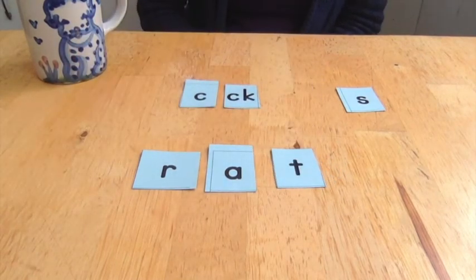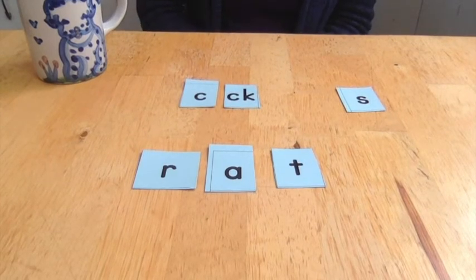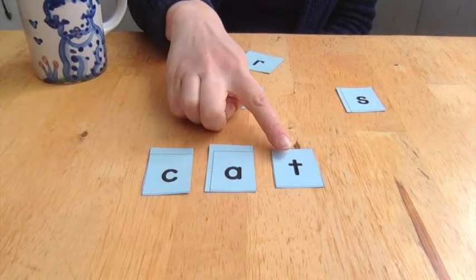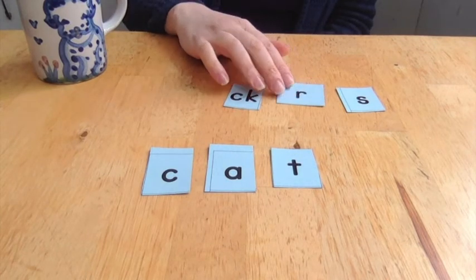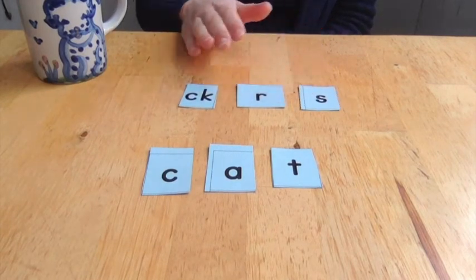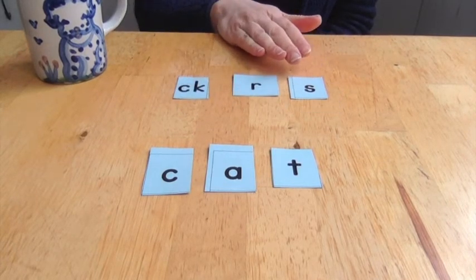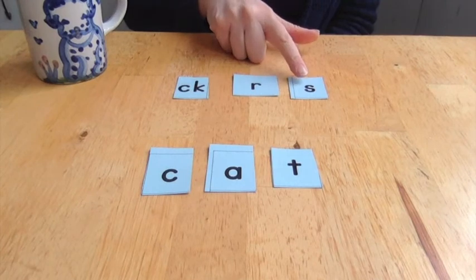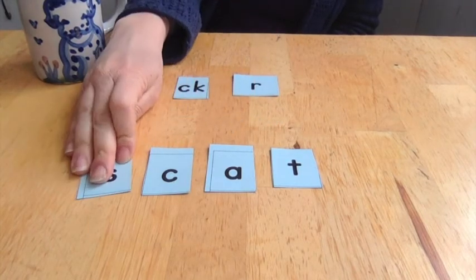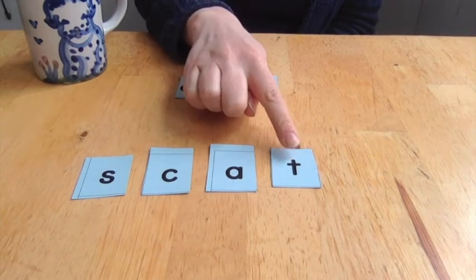Okay. The next word I want you to make is rat. It's going to be one change at the beginning. Rat. Yep. R-A-T. Rat. Okay, the next word is cat. Another change at the beginning. Cat. C-A-T. Cat. Okay, now it's going to get just a little bit trickier. The next word is scat. Scat. So that's going to be a consonant blend at the beginning of the word. Scat. S-C-A-T. Scat.